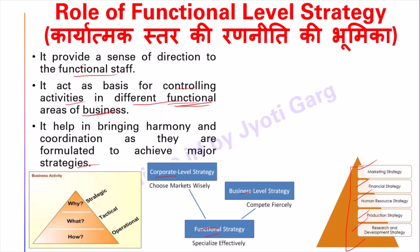To summarize the three levels: corporate level strategy answers the question 'Why' — why do we have to do something? Business level strategy answers 'What' — what do we have to do? And functional level strategy answers 'How' — how do we have to do something?